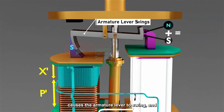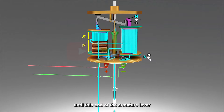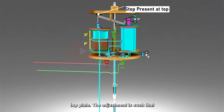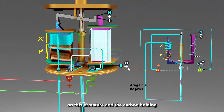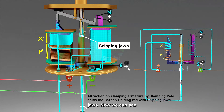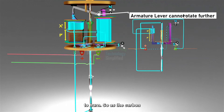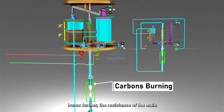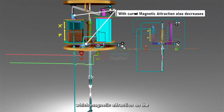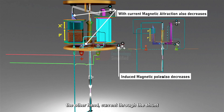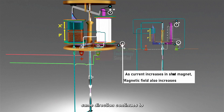This causes the armature lever to swing, and thus this armature descends gradually under the weight of the moving parts, until this end of the armature lever strikes a stop present on the top plate. The adjustment is such that when this takes place, there is sufficient magnetic force of attraction on this armature and the carbon holding rod is gripped securely by the jaws. Now, the armature lever cannot rotate further, but the carbon continues to burn. As the carbon burns further, the resistance of the main magnet continues to increase and the current through it continues to decrease, causing magnetic attraction on the armature to continue decreasing. On the other hand, current through the shunt magnet continues to increase, due to which the magnetic field in the same direction continues to increase.